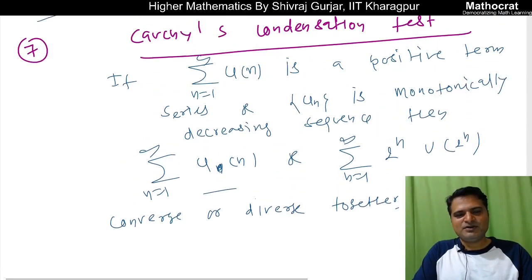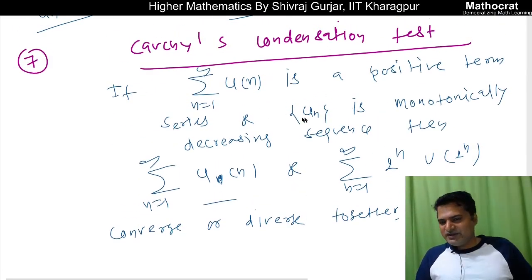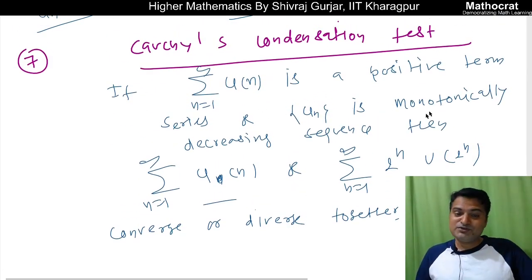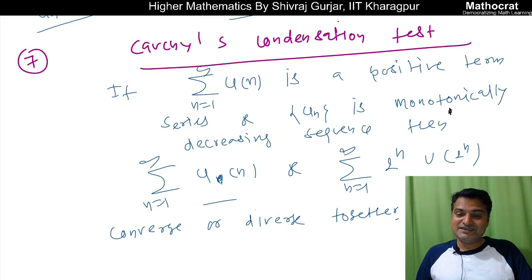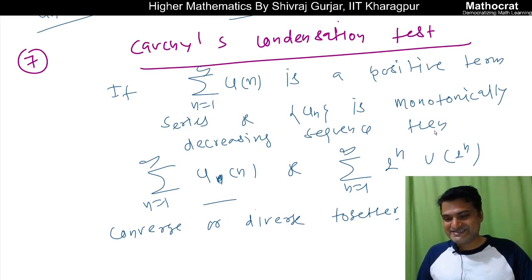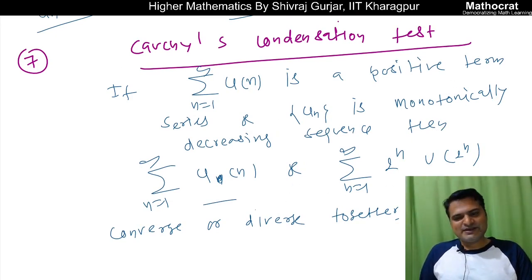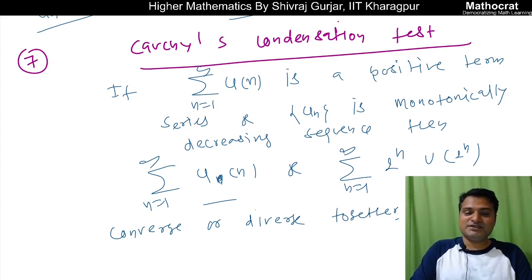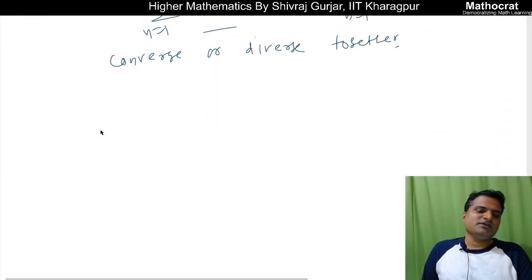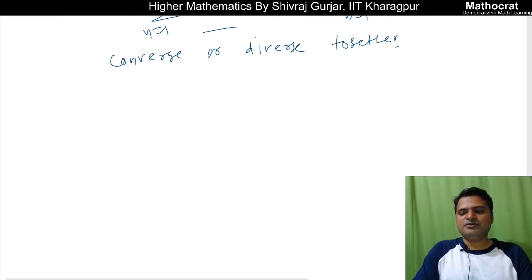So if u_n is a positive term series and a monotonically decreasing sequence, then the series and the condensed series both converge or diverge together. This is very useful when you see 2 to the power n.